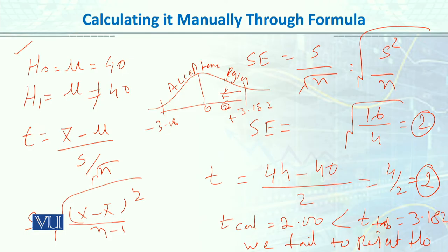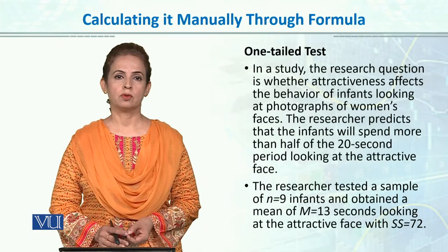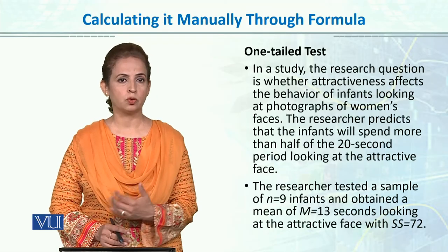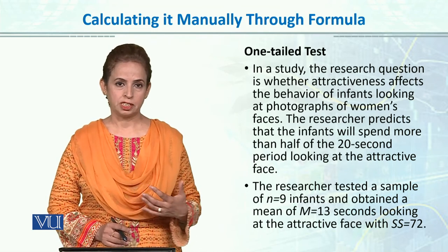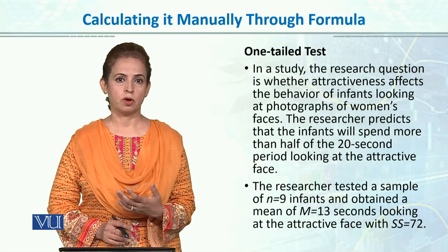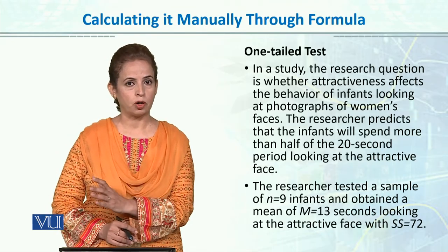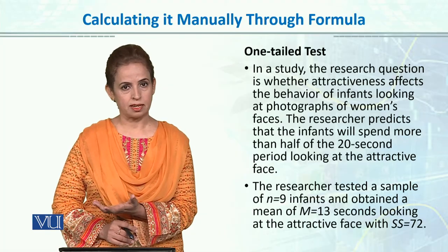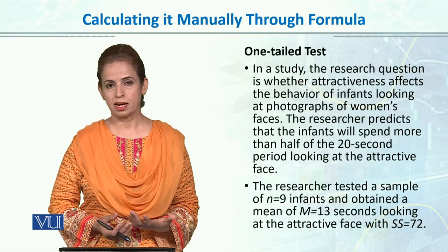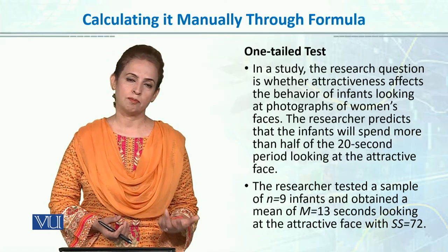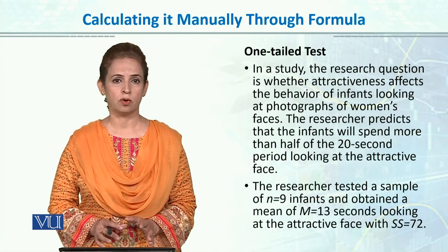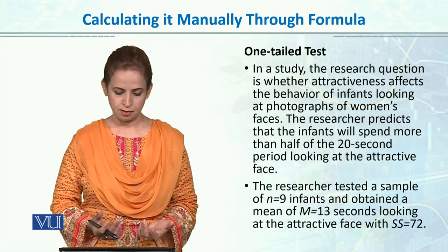Let's do another example with the one-tail test. We define which test to use based on our hypothesis. If I am sure that the population is greater than a certain value, I go for one-tail testing. If I'm not sure about the data, I usually go with the two-tail test — it could be less or it could be more. Let's do an example with the one-tail test.